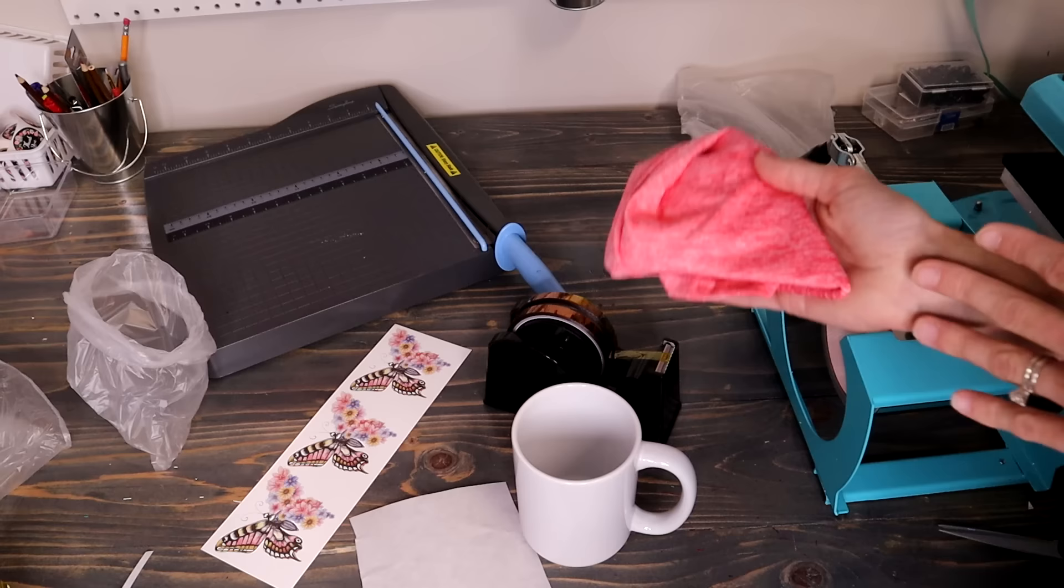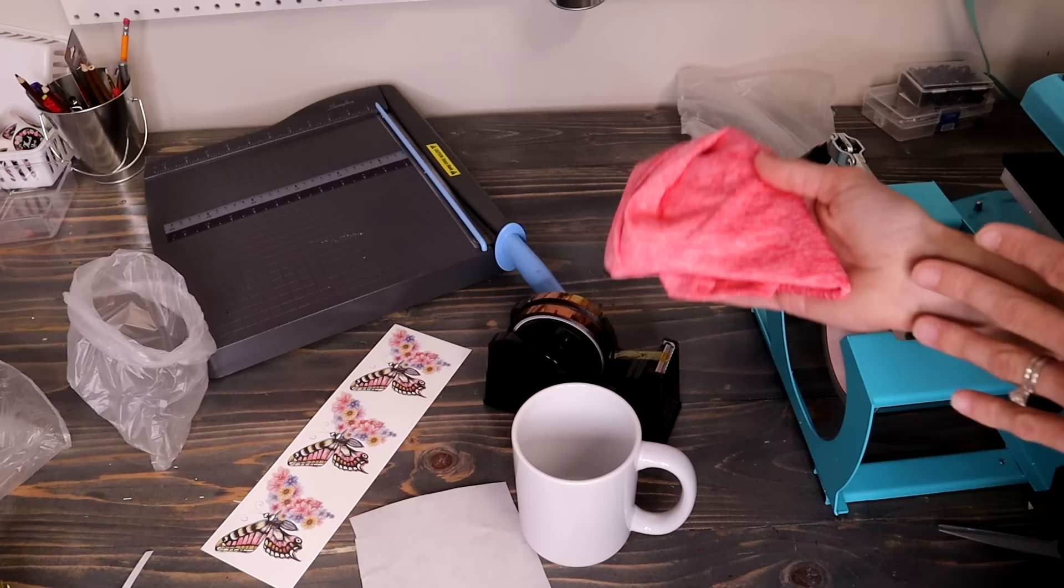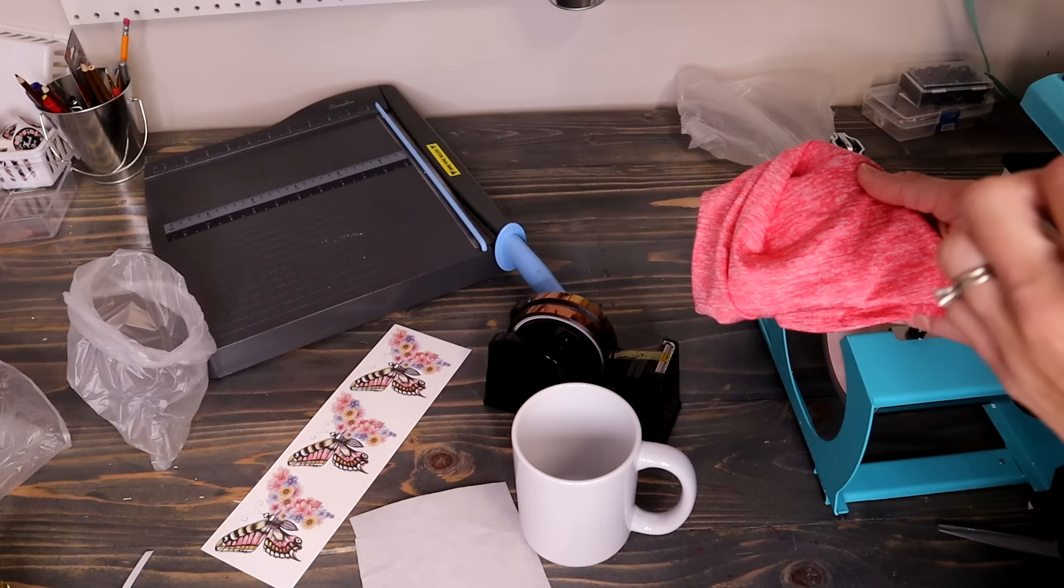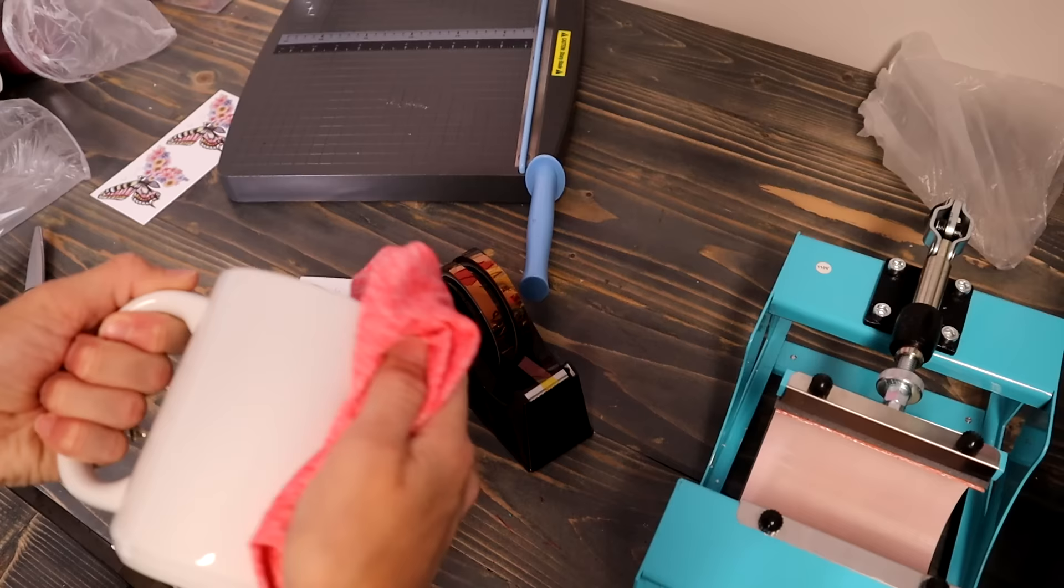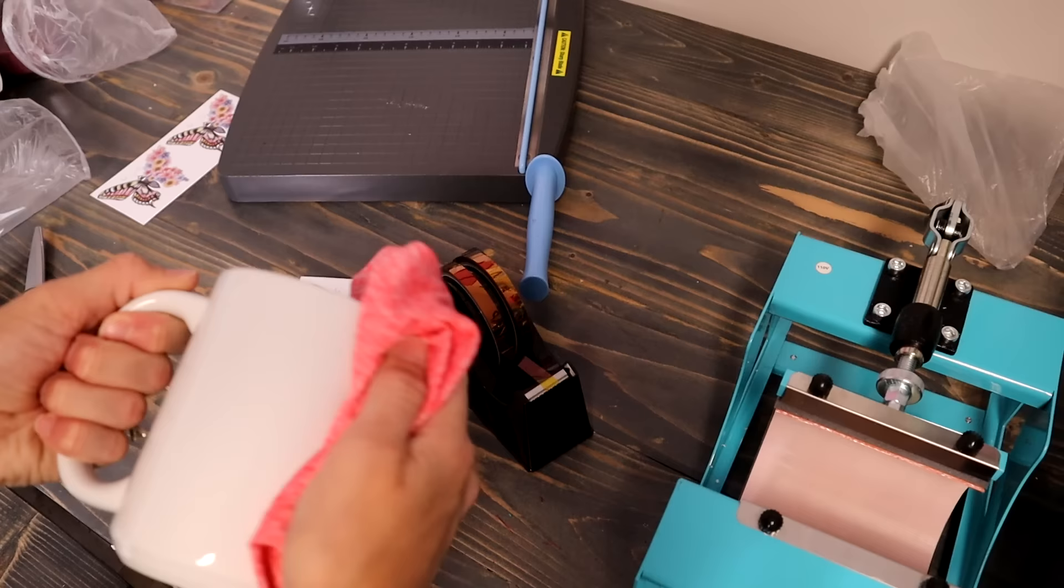And then you'll just need something to wipe your cup off. You don't want to leave any lint or anything on your cup or it will dye into your tumbler or your mug, so definitely give that a good wipe down before you put your design on it. Okay, I'm going to just start off by cleaning my mug.